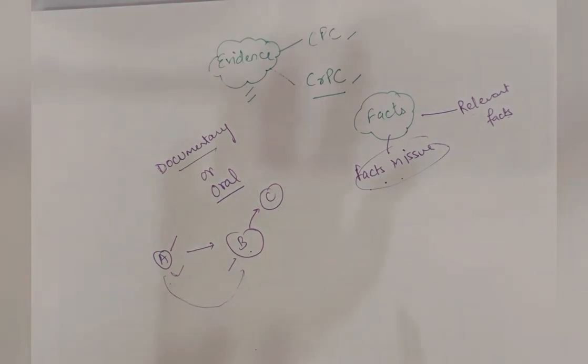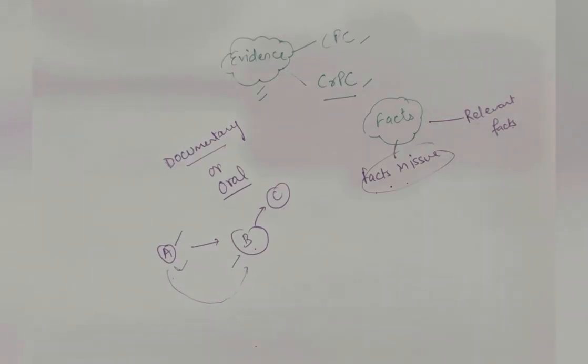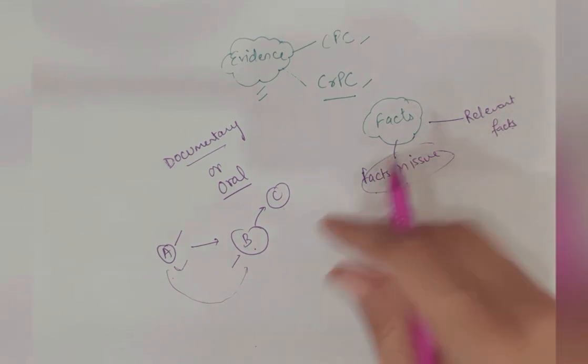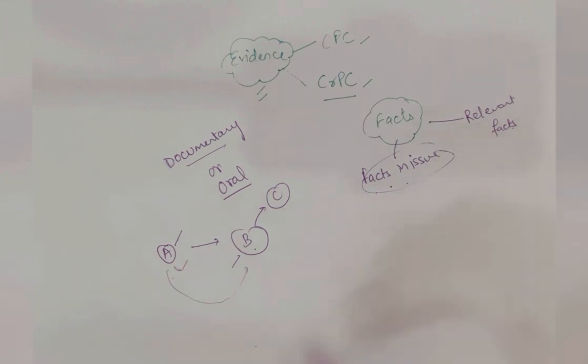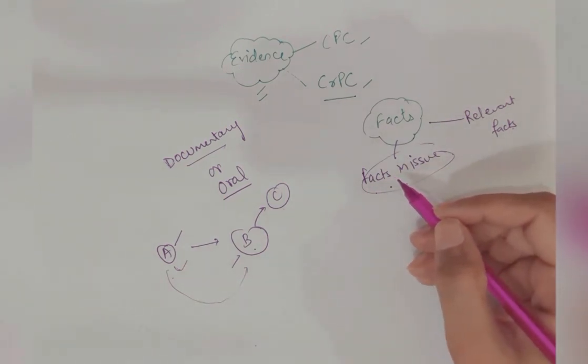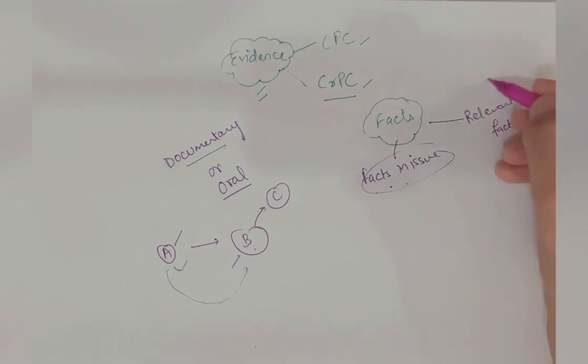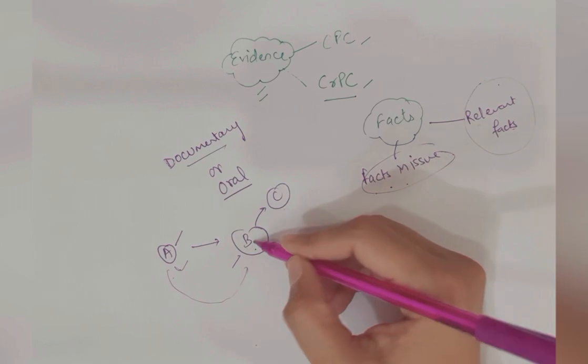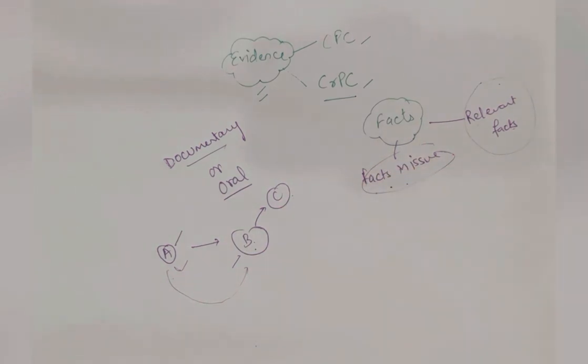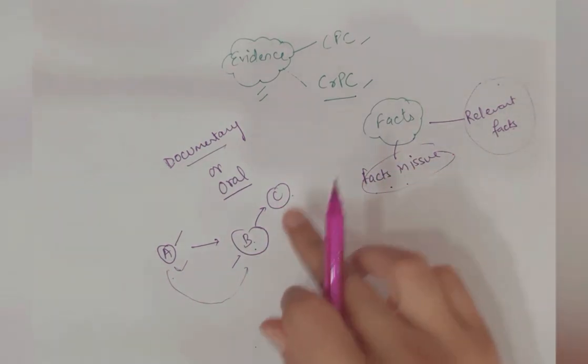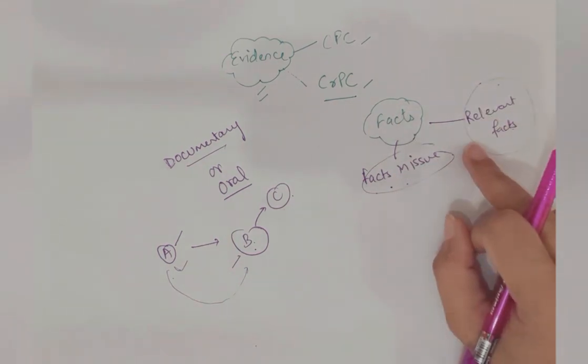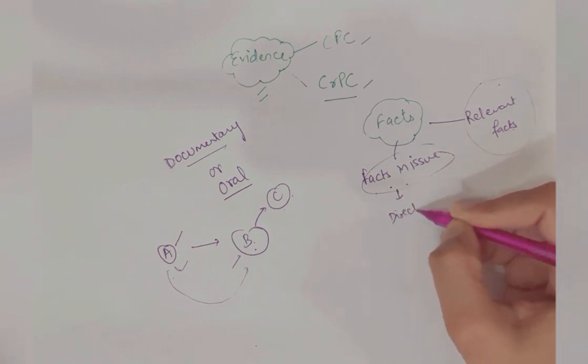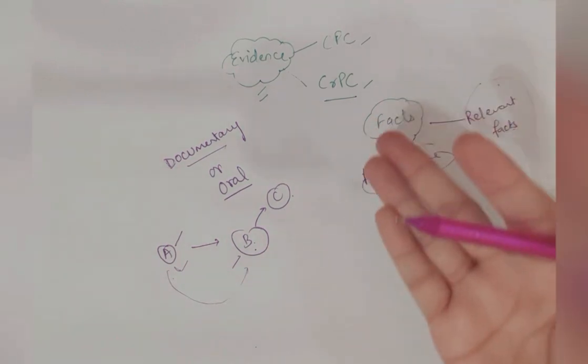We have to prove the facts in issue, but it cannot be proved directly when there is no direct evidence. Therefore it can be proved by relevant facts. That's why relevant facts are necessary - like fingerprints, or what B told C. So facts in issue are proved by relevant facts - both are dependent. Direct facts in issue are those which are absolutely direct, like someone saw the murder happen - an eye witness.